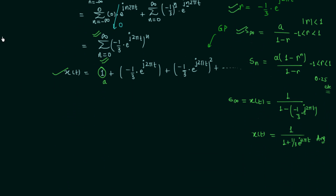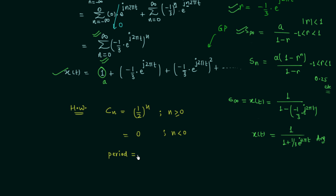Now we will move to the homework problem, which is similar to the example we just solved. In this case, the coefficient c_n = (1/2)^n whenever n ≥ 0, and c_n = 0 whenever n < 0. The period is given as 2, and you need to find X(0).